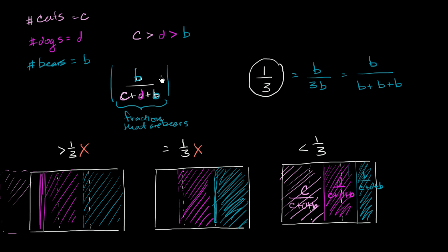The only difference between this expression right over here, b over c plus d plus b, and b over b plus b plus b is that our denominators are different. And the only difference in our denominators, this denominator has a c plus d here, while this has a b plus b over here.